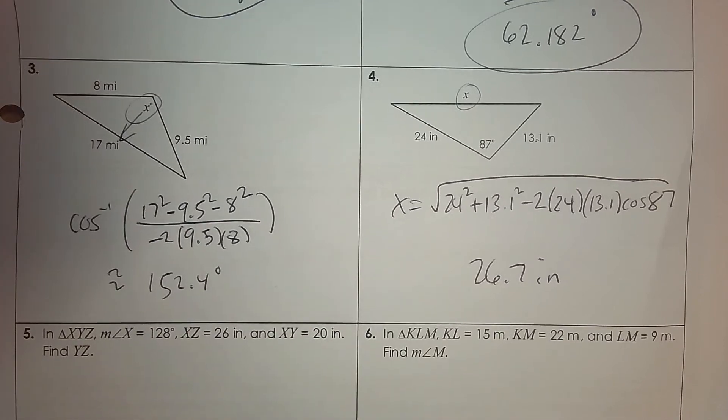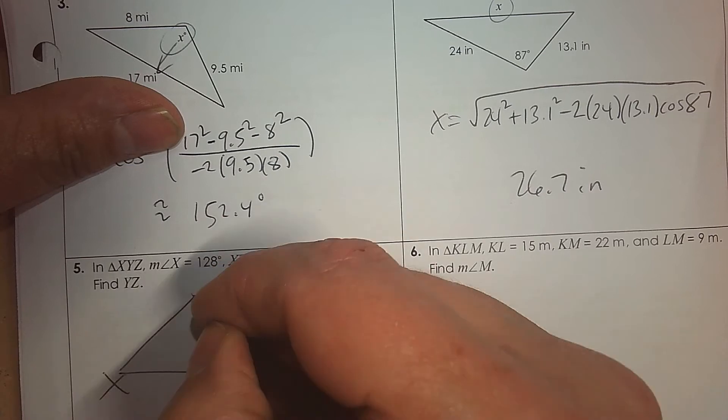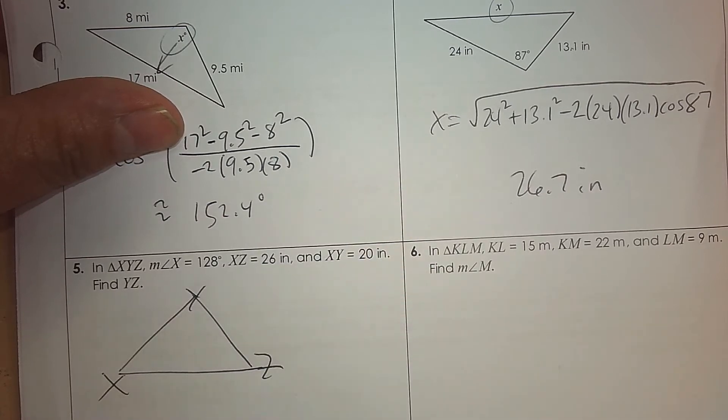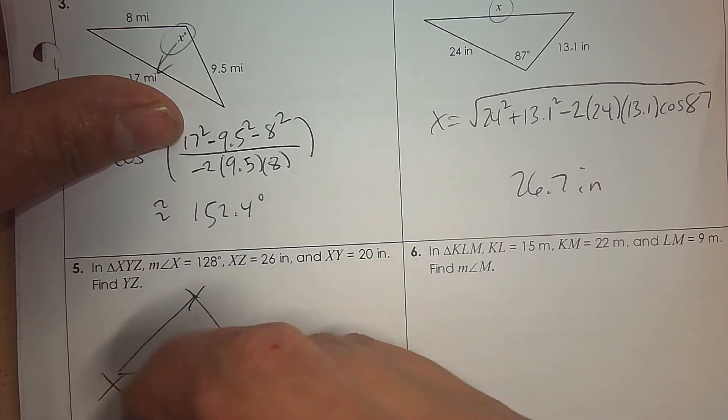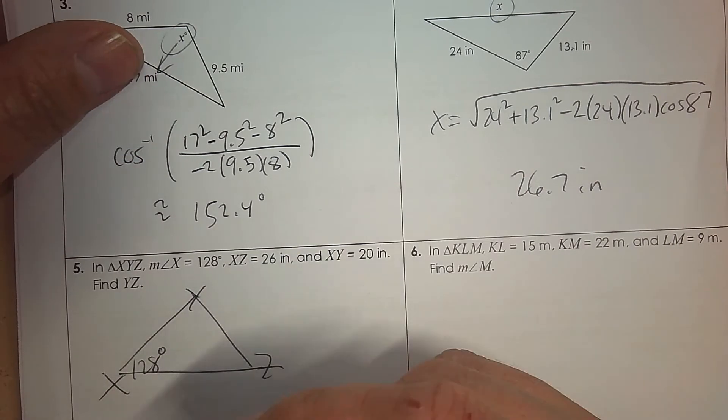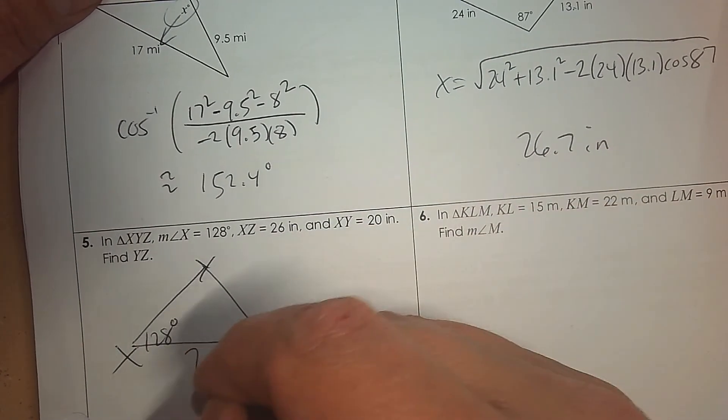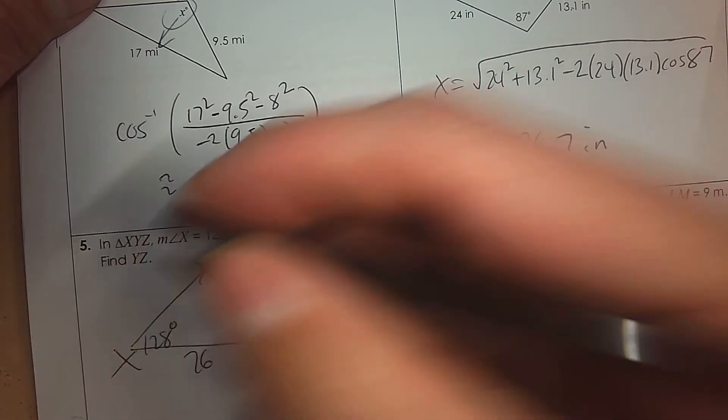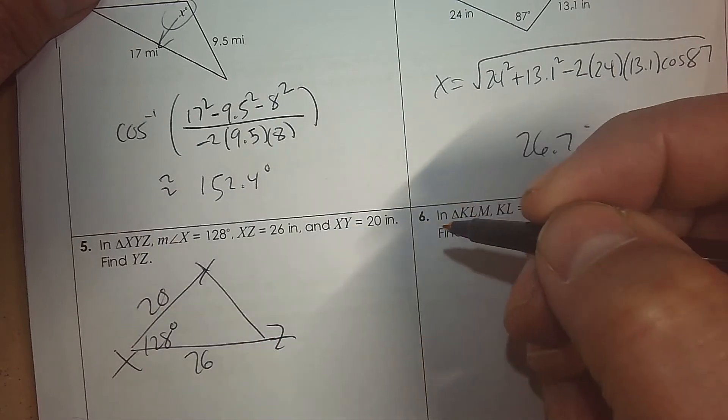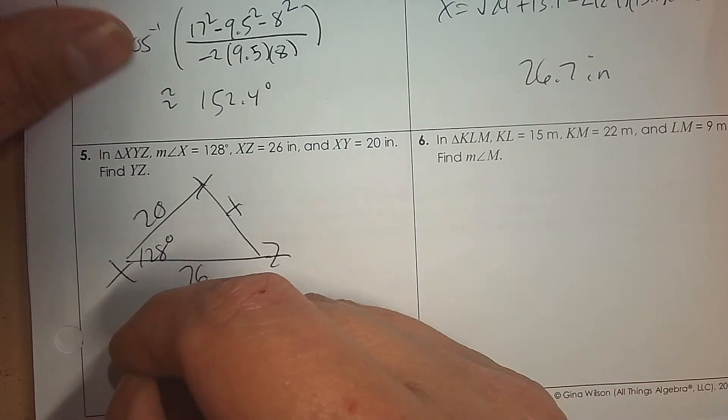Number 5, we actually have to draw a triangle. So x, y, z. It says angle x is 128. And I know it's an acute angle, but we're just setting up a structure to find what's missing. x to z is 26. x to y is 20. And I need to find this side. So label what you're given.